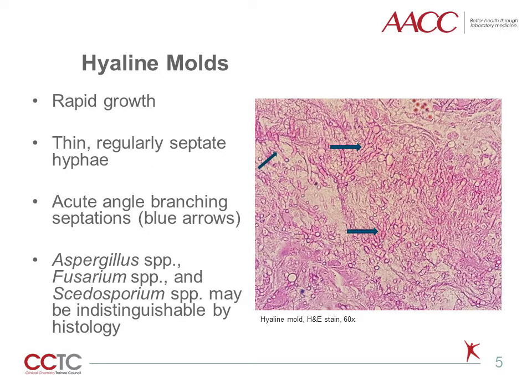Hyaline molds are distinguished by colony morphology and rapid growth rate. Microscopically, they have thin, colorless, regularly septate hyphae with acute angle branching, as seen in this image. Some of the species in this category include Aspergillus species, Fusarium species, and Paecilomyces species, which are indistinguishable by histology examination. In the next slides, I will describe clinically relevant hyaline molds commonly seen in the microbiology laboratory in more detail.